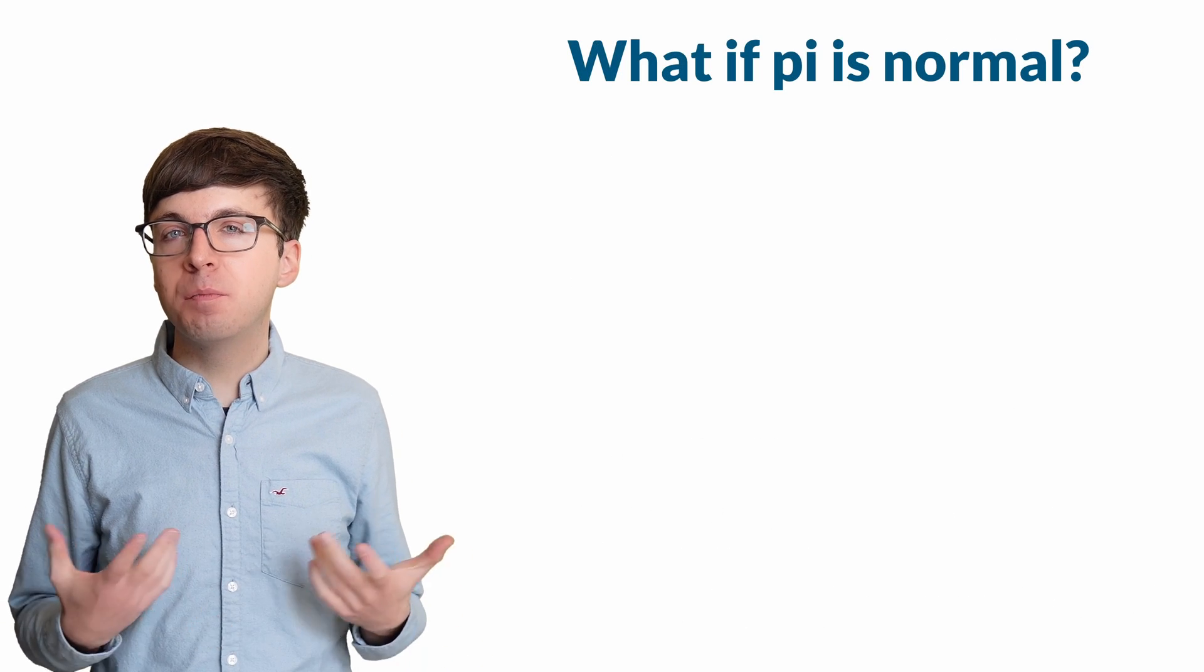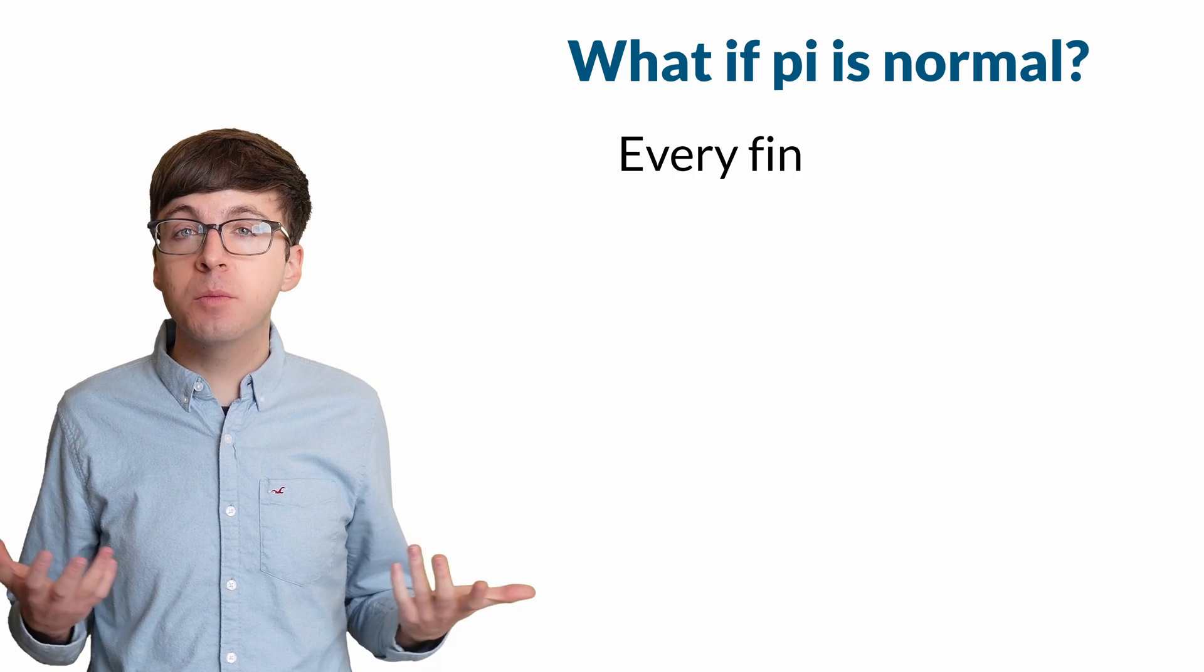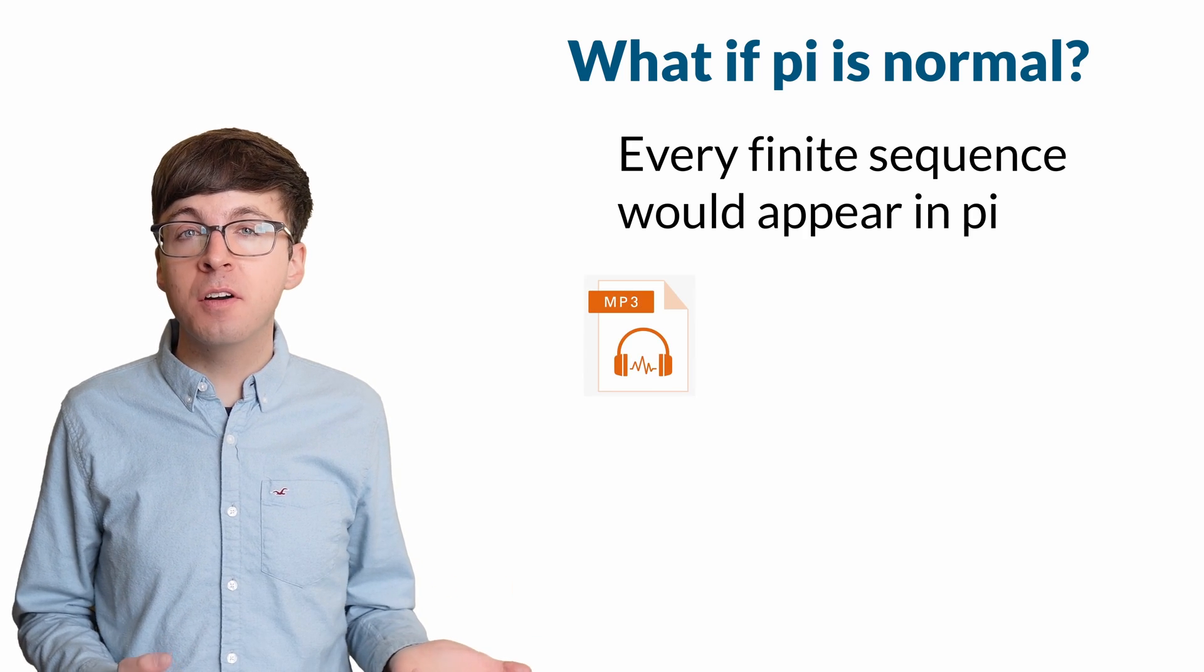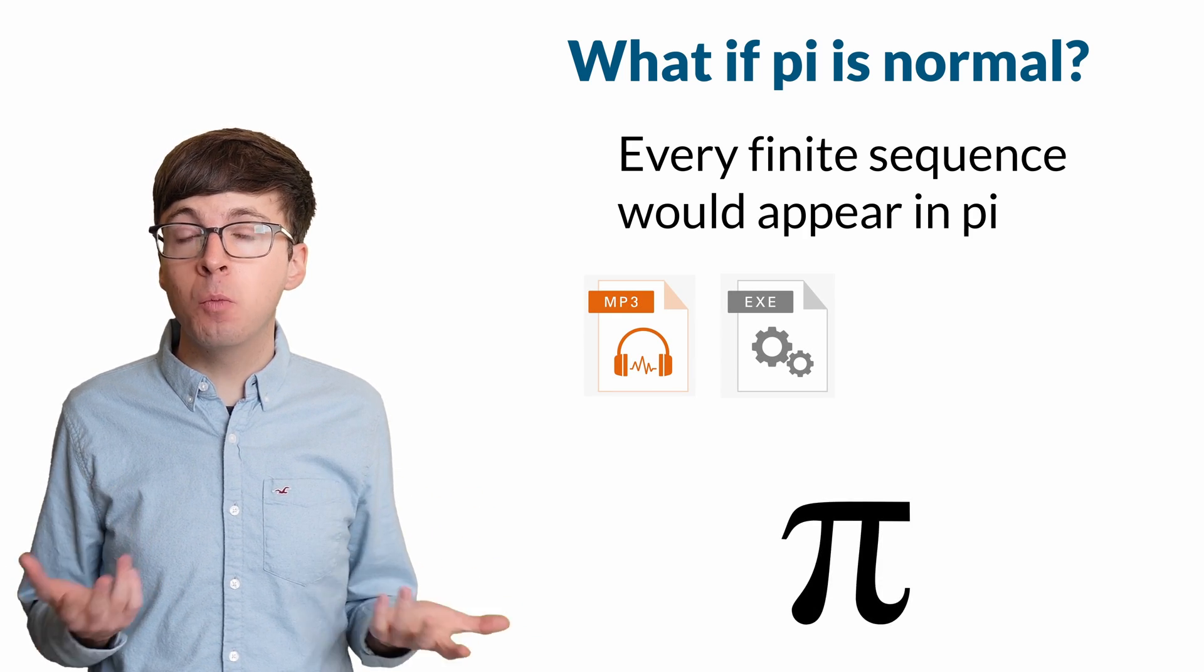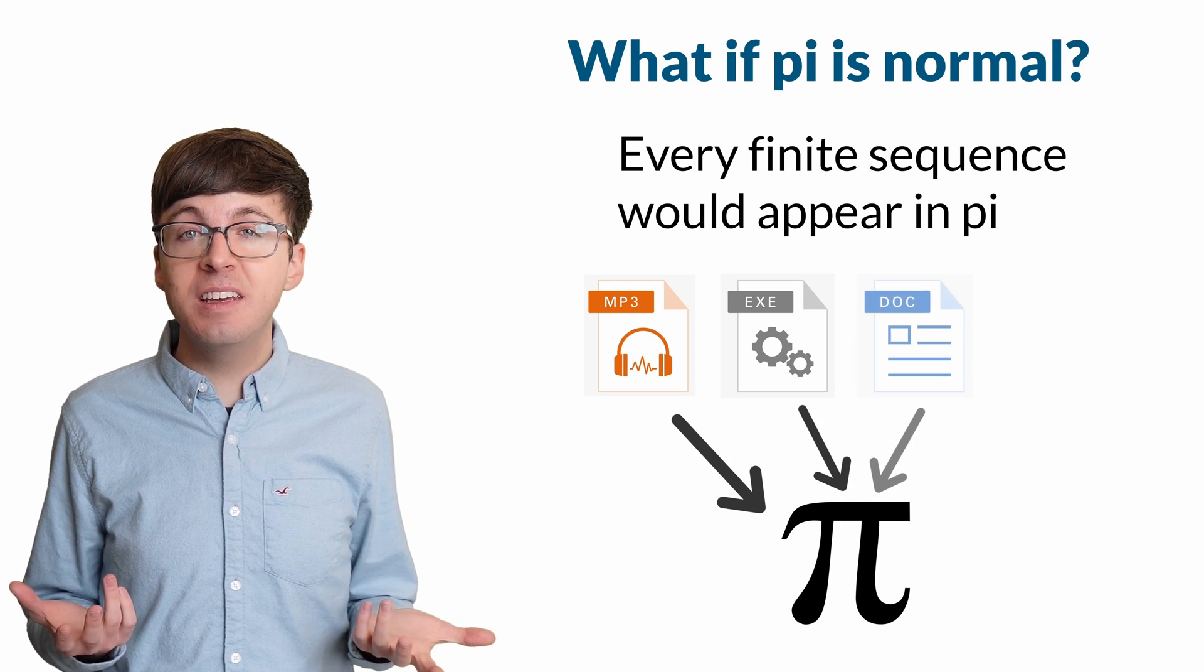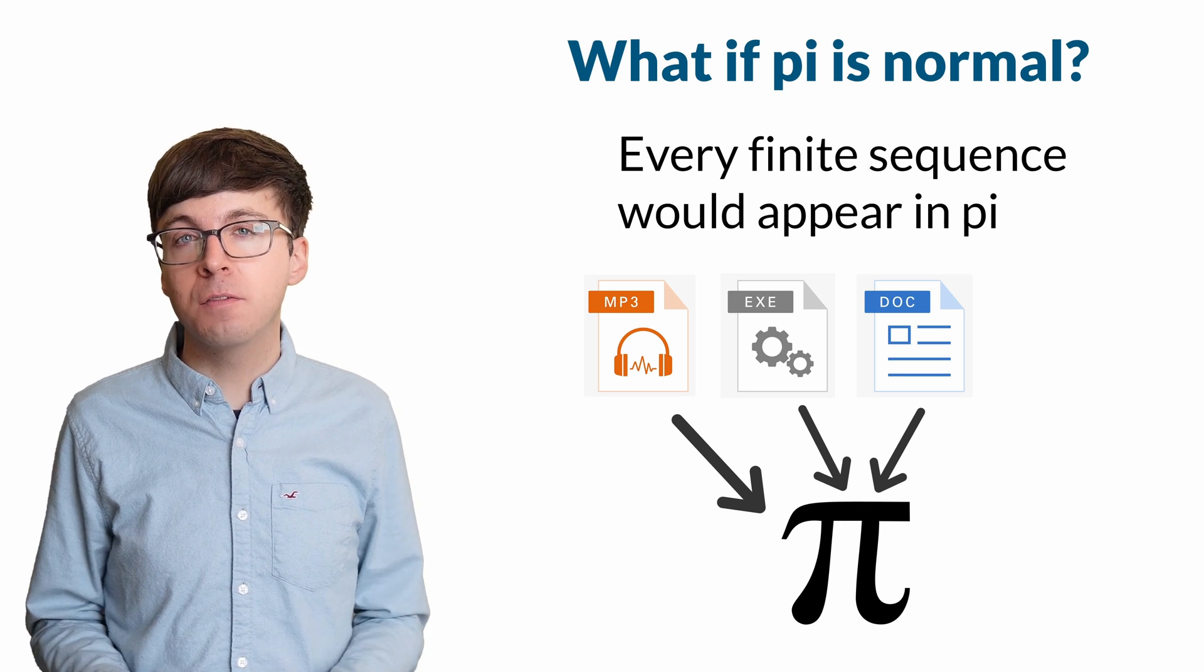What would it mean if pi is a normal number? This would imply that every possible finite sequence of digits shows up in pi. So your favorite song or video game shows up somewhere in pi as a binary sequence. Pi would contain a detailed and perfectly accurate biography of your life, your past, present, and future.